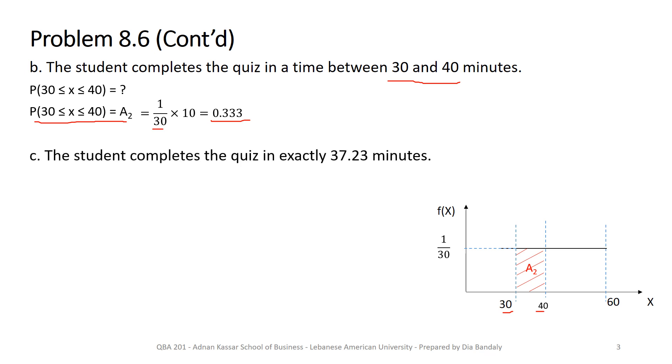Part c, the last part. What's the probability that the student completes the quiz in exactly 37.23 minutes? I would like you here to stop the video and think about this on your own. What do you think? What would be the probability that x is exactly equal to 37.23? I hope that you got it correct. The probability that x is equal to this is equal to 0.